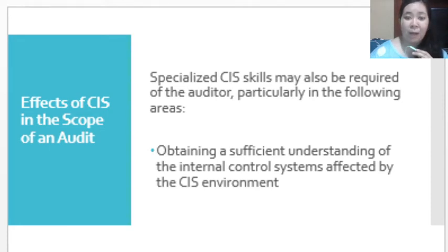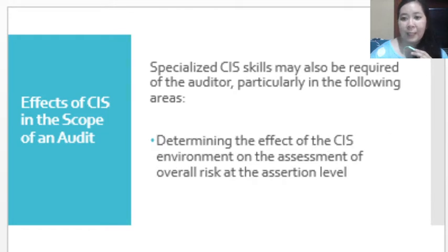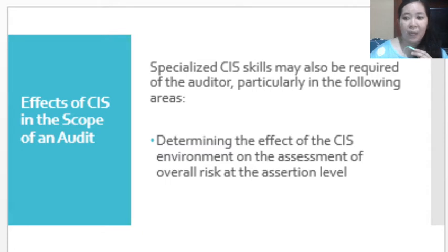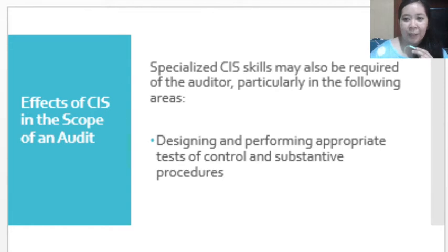In the previous module, there was an introduction about the basic concepts in computer — this is what the auditor should also know about the entity. Another area is determining the effect of the CIS environment on the assessment of overall risk at the assertion level, because there are risks associated when an entity uses a computer, such as the absence or lack of audit trail and issues with authorization of transactions. Another is designing and performing the appropriate test of controls as well as the substantive procedures suited to a CIS environment.